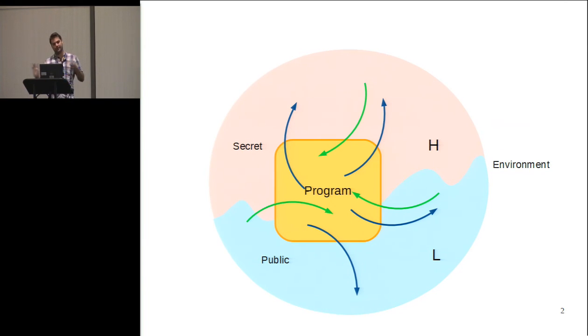We're considering this very simple example with just low and high. But in general, this actually generalizes to an arbitrary lattice. What we have is basically some kind of partial order among these security labels, such as L and H.